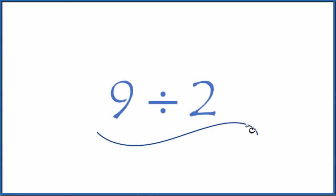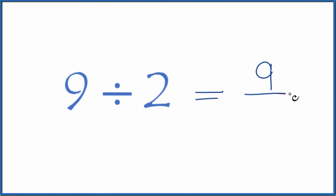If you need to divide 9 by 2, here's how you can do that. Let's think of 9 divided by 2 as a fraction. That's the same as 9 over 2.